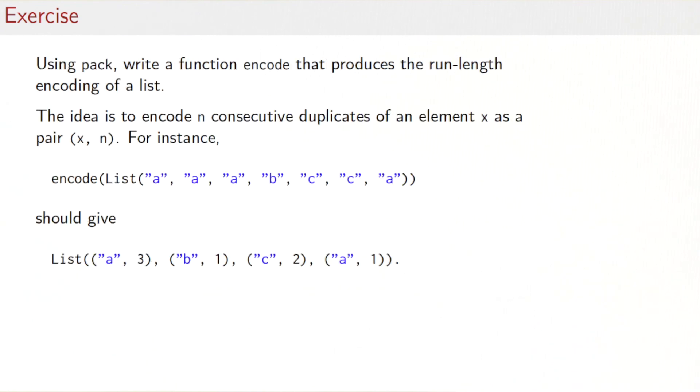We're not done yet. As a second exercise, I would like you to use pack to write a second function, encode, that produces a run length encoding of a list. Run length encodings are often used for compressions of images and other files. The idea is to encode n consecutive duplicates of an element in the list as a pair X, n. So instead of writing the element n times, we just have a single entry, which is a pair of what the element was and how many times we have written it. For instance, encode of the list that we've seen before should give us A3, B1, C2 and again A1.